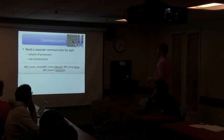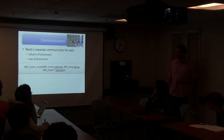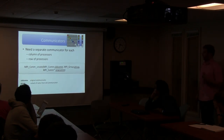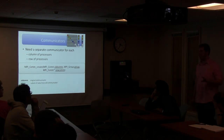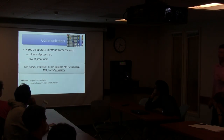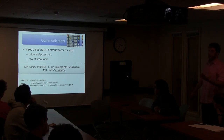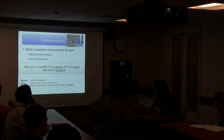The old communicator is the original communicator. The group represents a subset of ranks from the old communicator - it's essentially a list of ranks from the old communicator. The new communicator is composed of only the processes in the group. In this new communicator, all the ranks will be re-indexed - so processors two and three in a sub-communicator become zero and one.